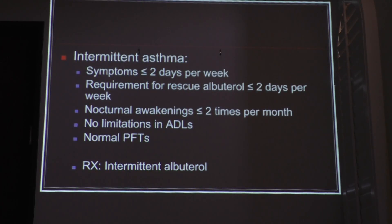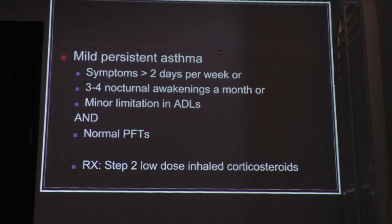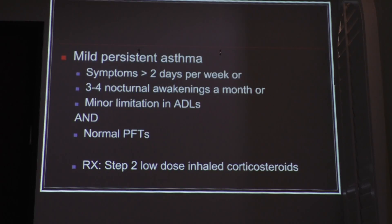For intermittent asthma, very mild symptoms, no limitations in activities of daily living, normal PFTs — management is albuterol, don't get it wrong on your boards. Mild persistent asthma, more symptoms, more than two days per week — you treat these patients with low-dose inhaled corticosteroids. Options include fluticasone, or budesonide — which is more potent but more expensive. Usually beclomethasone (QVar) is a good way to start.